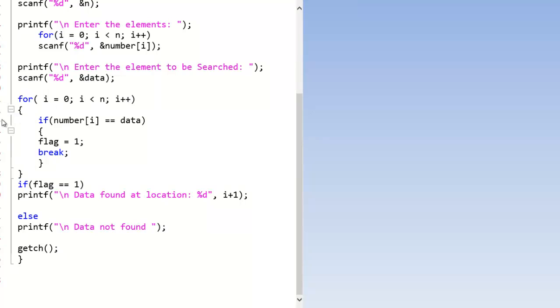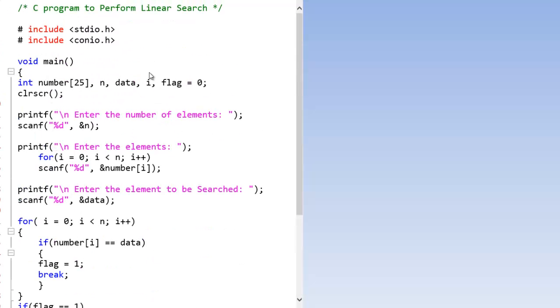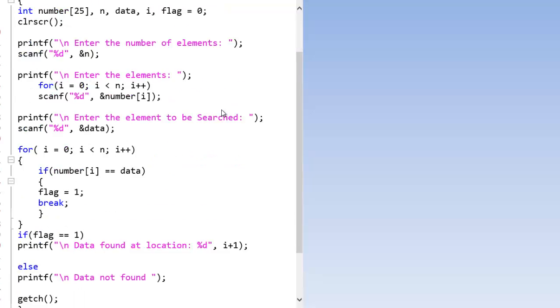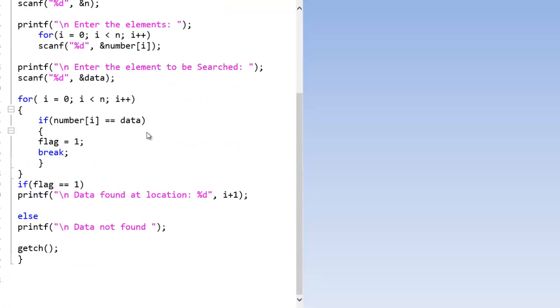So this is the for loop where we implement the linear search. So at every iteration of for and every value of i we are going to match each element of number array with the data. If number[i] equals to data then we set the flag variable to 1. So this is just a variable simple variable which is initialized with 0. So if the element is found we change its value to 1.